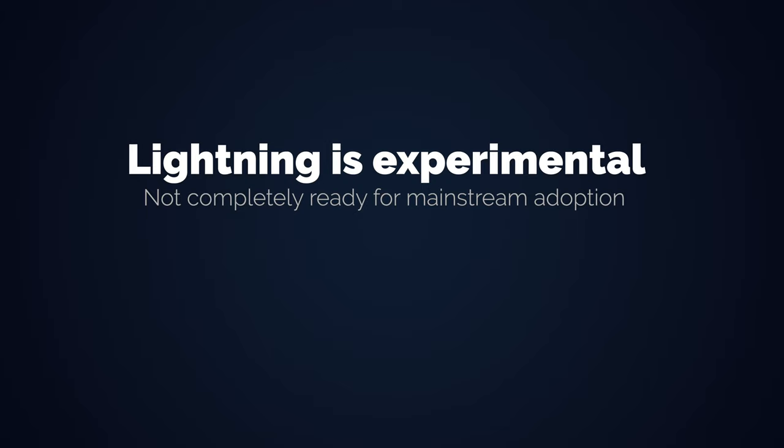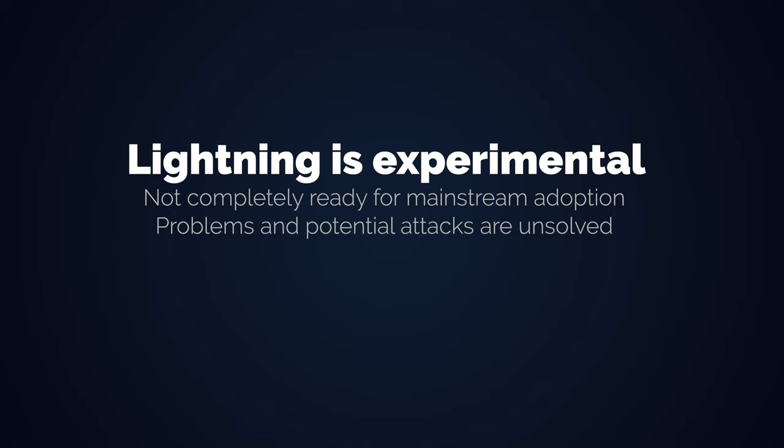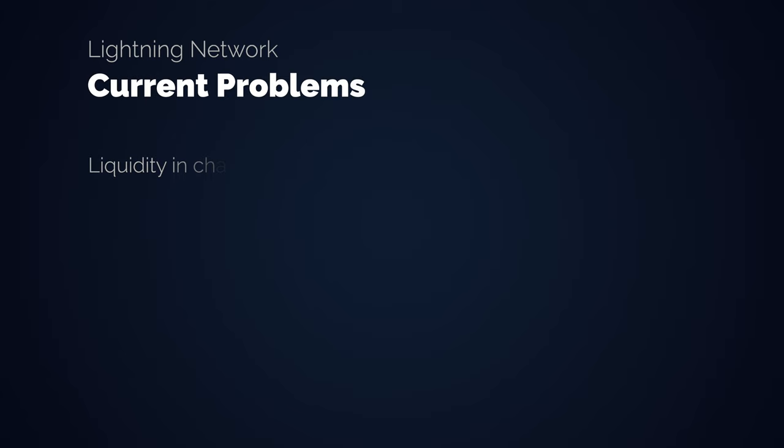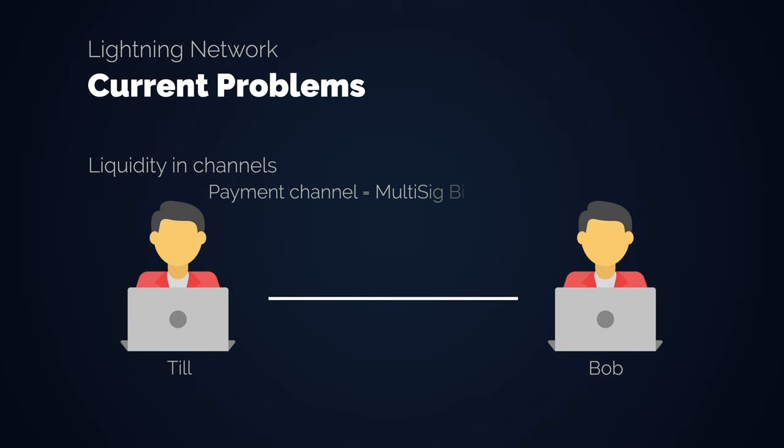First things first, Lightning is neither feature complete nor completely ready to go mainstream. After all, it's a complex new technology that's still in its infancy or experimental stage. Many developers will tell you there are many problems ahead — these are technically hard problems, but they are not unsolvable problems. One issue is channel liquidity, the limits that come with it and the associated user experience. It's not really intuitive that you need to open a channel with someone that you pre-fill with liquidity before you can start transacting. But this problem becomes less of a problem the more nodes and routes exist in the network.